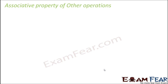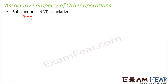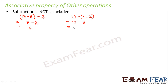In a similar way, for associative property we will look at the other operations. Let us start with subtraction - subtraction is not associative. For example, 13 minus 5 minus 2: calculating 13 minus 5 first gives 8 minus 2, which equals 6. Now changing the bracket position to 13 minus (5 minus 2): 5 minus 2 is 3, so the result is 10. The results are not the same, so A minus (B minus C) is not equal to (A minus B) minus C. Therefore, subtraction is not associative.